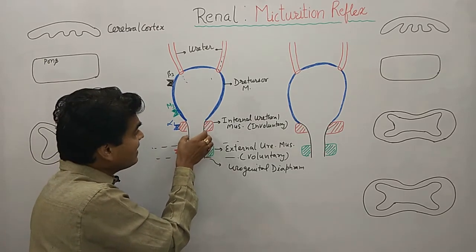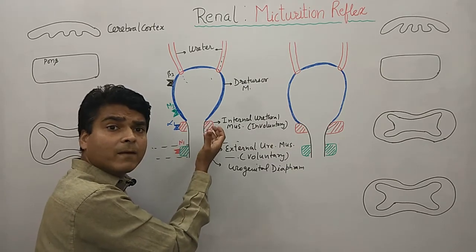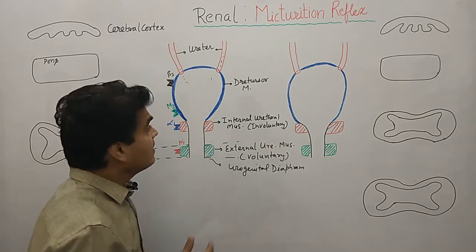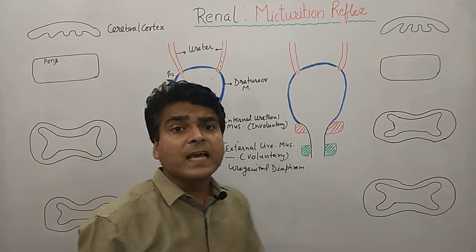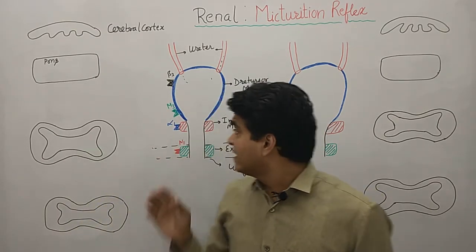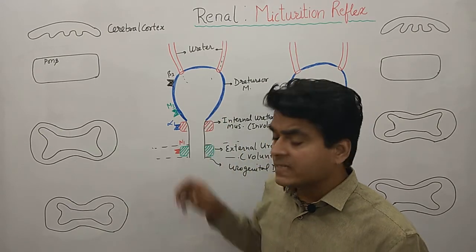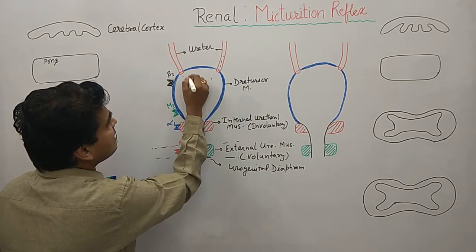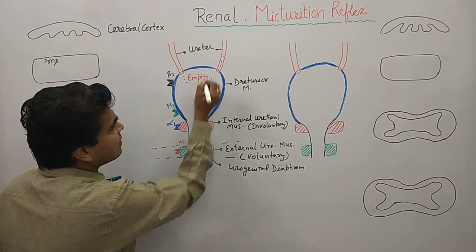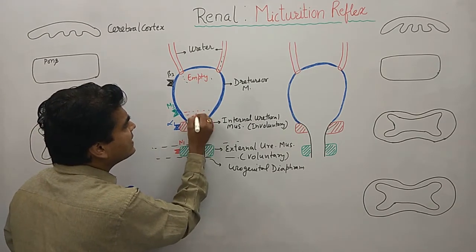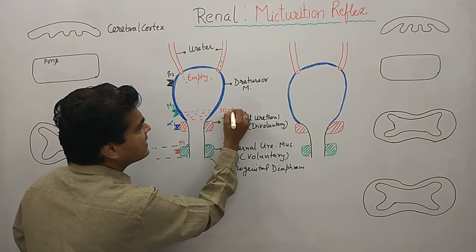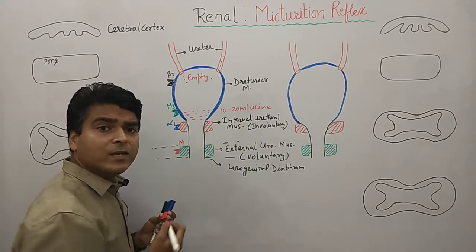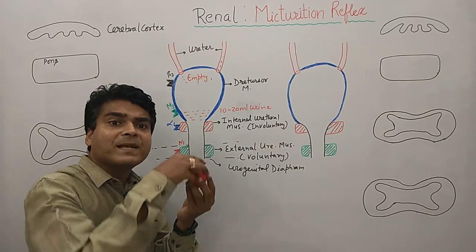In females we have a urethra, and in males we have a prostatic urethra as well as other urethral segments. In the initial condition, if the urinary bladder is empty, there is only 10 to 20 ml of urine remaining in it.